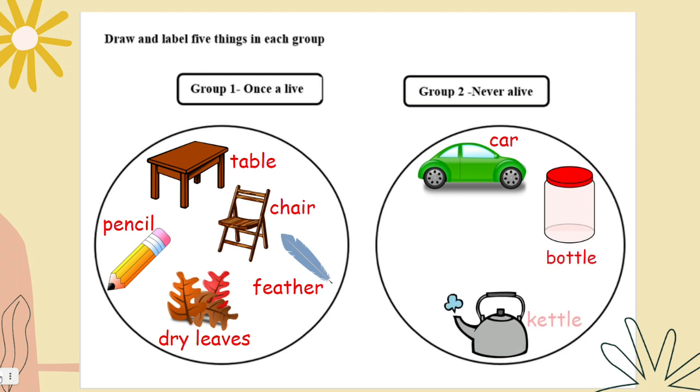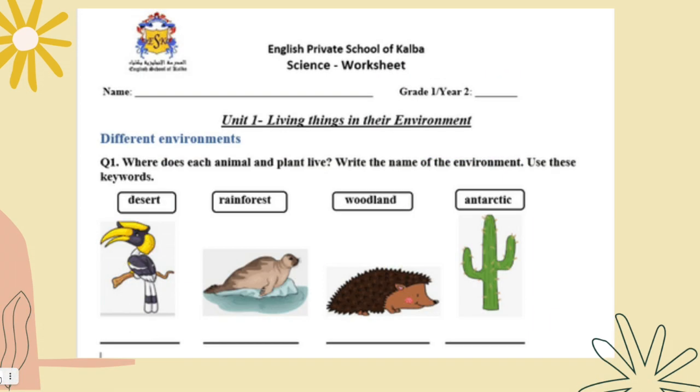Never alive because they don't need food, water, and air to survive. These are some examples: car, bottle, kettle, plate, spoon, and fork. You can think of other things. Just all the time look around you inside and outside your house and you will find lots of things that are never alive, from your living room to your bedroom to kitchen and other parts of your house.